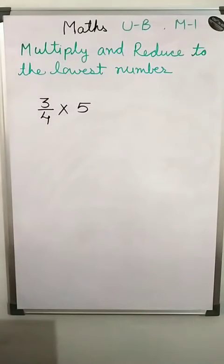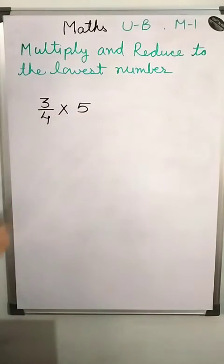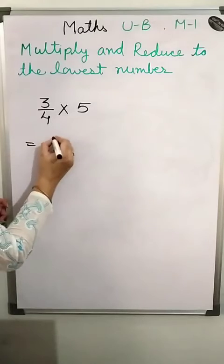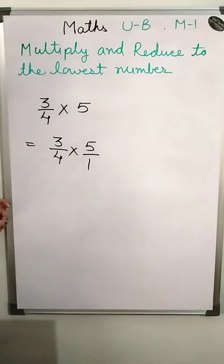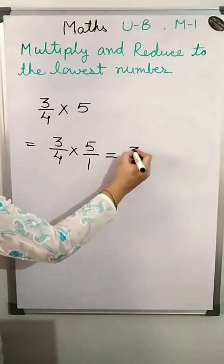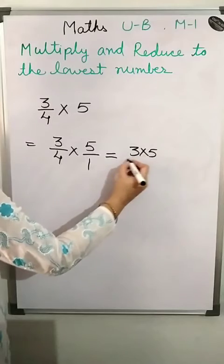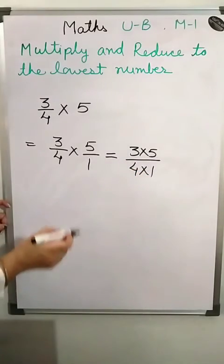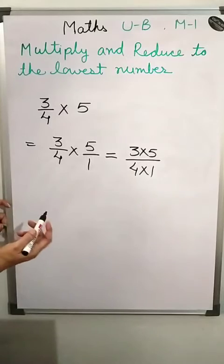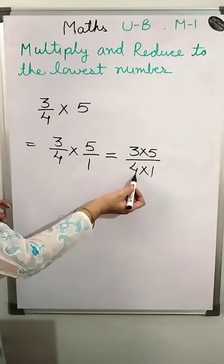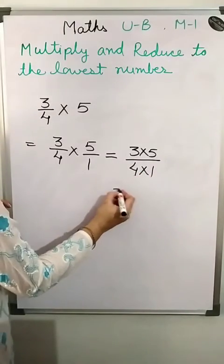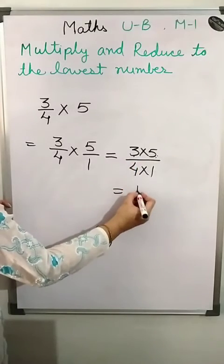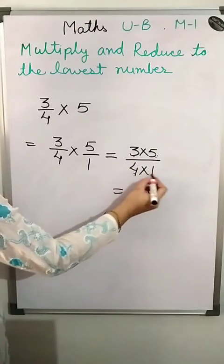Now the question is 3/4 multiplied by 5. Here the denominator is not given, so we write 1 in the denominator. Follow the steps: multiply numerator to numerator and denominator to denominator. 4 is not a multiple of 3 or 5, so we multiply directly: 3 into 5 is 15, and 4 into 1 is 4.